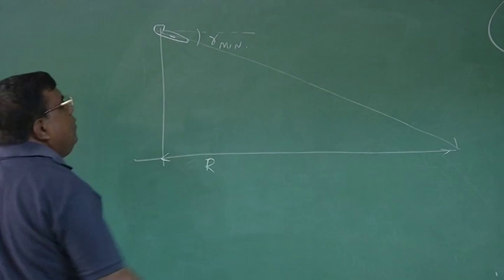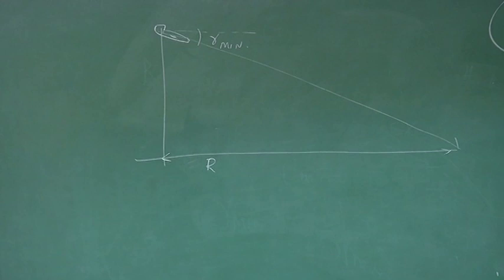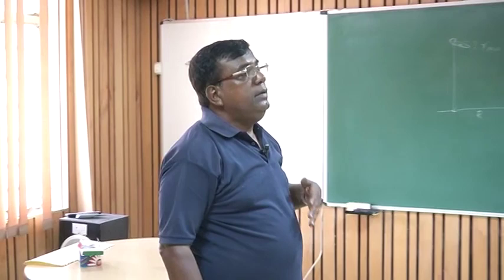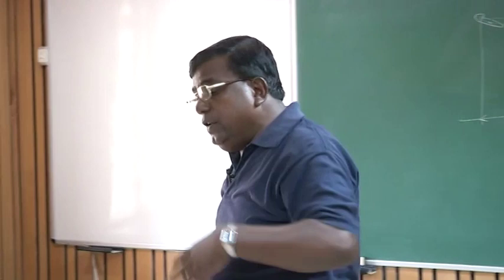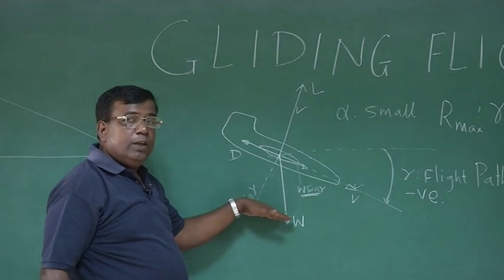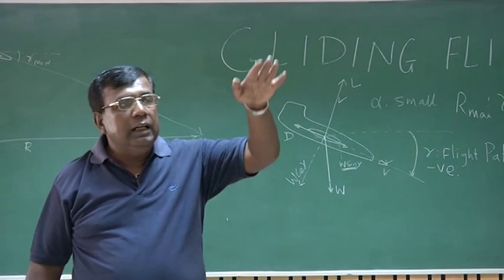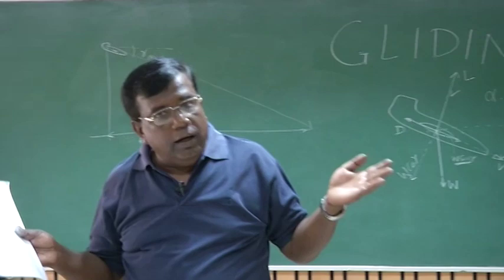But the next question comes to my mind, if I decide to stay for long in the air, that is, I want to stay for longer duration. That explicitly gives me a message, if that is possible, if rate of descent is minimum, you are familiar with rate of climb. Now I am talking about rate of descent, if this is minimum, then I can stay for longer hours. So let us find out what is that condition for a gliding flight.